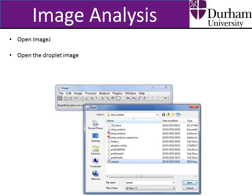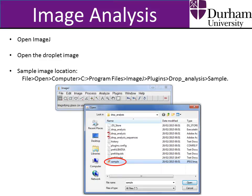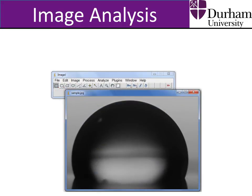To analyse a droplet image, first open ImageJ and open the droplet image. I will use the sample image provided in the Drop Analysis folder to illustrate, and I recommend practising on this sample image before analysing your own droplets. It should be noted that, as shown in this sample droplet image, there are three fundamental droplet image requirements. Firstly, the image must be greyscale, which can easily be achieved with most image editing software like Windows Live Photo Gallery. Simply save the droplet image as greyscale, and then open that greyscale version of the photo in ImageJ.